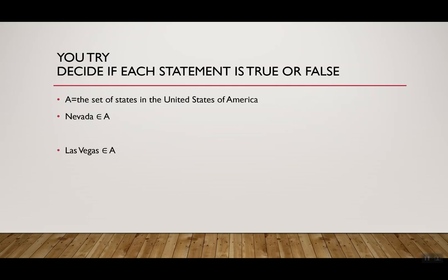So let's take a quick example for you to try. I have two things set here. I said Nevada is an element of set A, and then I have Las Vegas is an element of set A, but before that I said A is the set of states in the United States. So I want you to decide true or false for each of these. Hopefully you said true for Nevada is an element of set A because Nevada is a state in the United States. But when we look at Las Vegas, we need to say false because Las Vegas is a city, not a state.